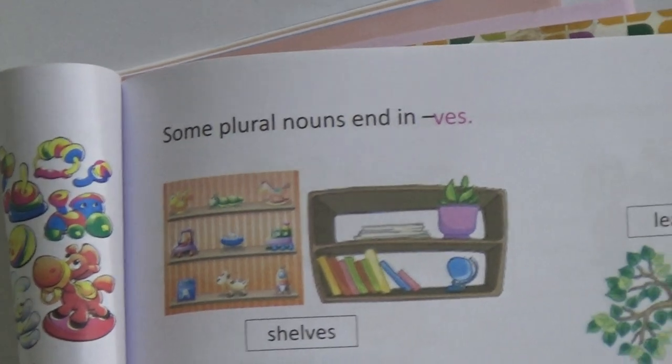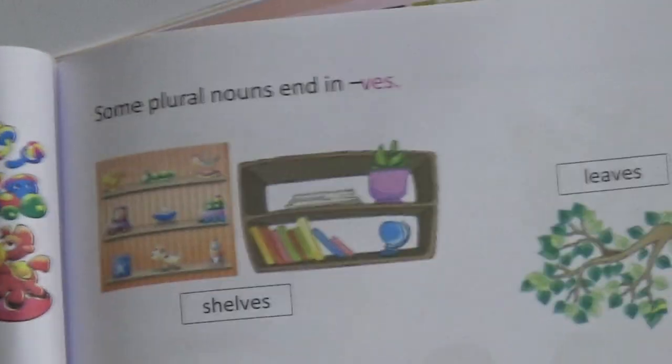Some plural words — monkeys, toys, keys, jerseys, trays — these are plural numbers. Shelves, leaves, knives, wolves, elves — all these are also plural numbers.